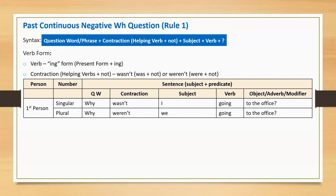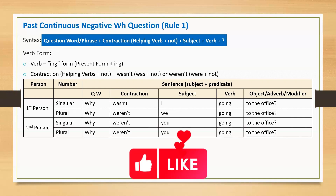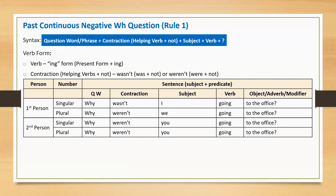First person plural: Why weren't we going to the office? Second person singular: Why weren't you going to the office? Second person plural: Why weren't you going to the office?